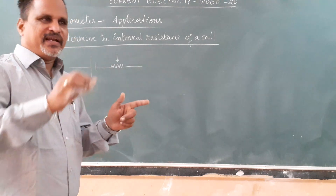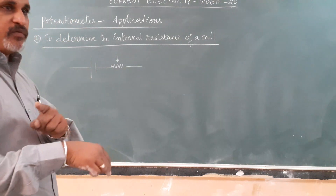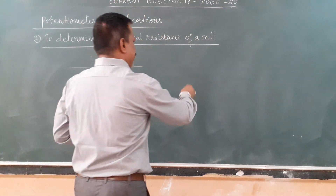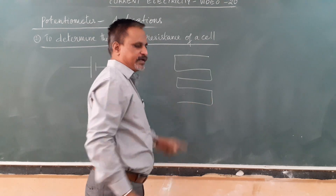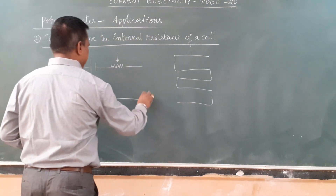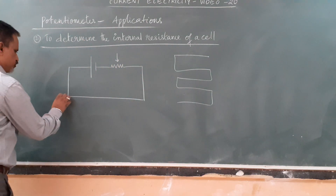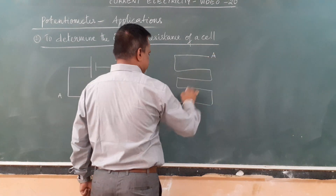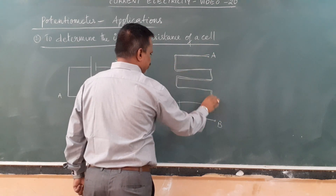Some books draw the potentiometer in a complex way to show that the potentiometer wire has a 10-metre length, so they draw the wire in multiple rows. But it is not necessary — you can show it as a single line from A to B. They take one end as A and the other as B and show the rows.